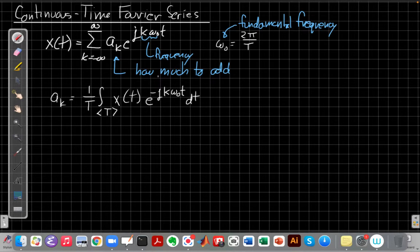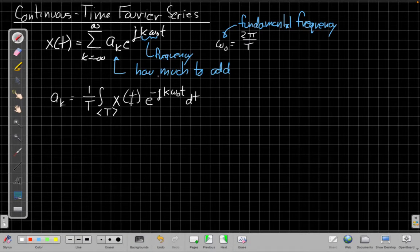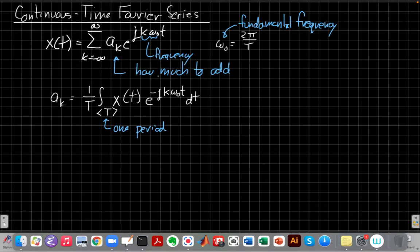So that equation says that if I have the signal x of t, the periodic signal I want to solve for, to find the a sub k's to say what's the recipe, the Fourier series for this. I take the integral over one period. So this little notation here, the bracket T means integrating over one period. So that one period could be from 0 to T, it could be minus T over 2 to plus T over 2. We'll see there are times where it's very helpful to make that period symmetric about 0 if the waveform itself is also symmetric about 0.